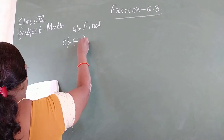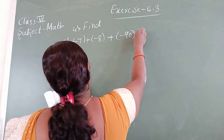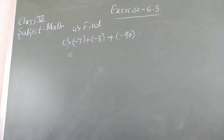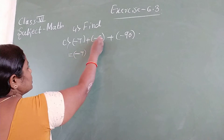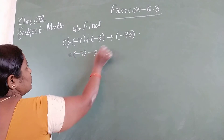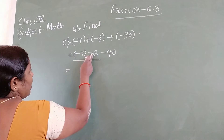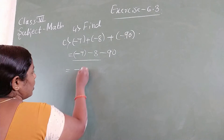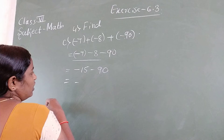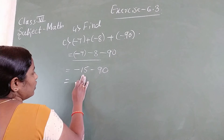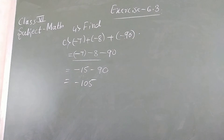Part C: minus 7 plus minus 8 plus minus 8 plus into bracket minus 19. All are minus. Simplify: plus into minus is minus. First add minus 7 and minus 8: answer is minus 15. Then minus 15 and minus 90: same signs, add — 90 plus 15 equals 105. Answer is minus 105.